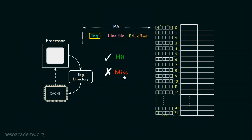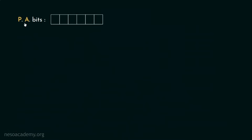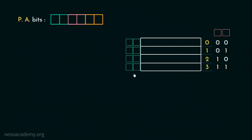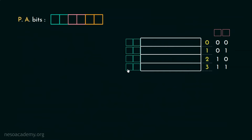An illustration will help us understand the concept lucidly. Suppose this is the generated physical address bits — it has 6 bits. The first two are the tag bits and these are the line number bits. Therefore, the cache has 2 squared, that is 4 lines. The least significant 2 bits are block offset. Now the tag bits are associated with every cache line; generally these are kept inside the tag directory, but for simplicity let's assume they are placed here.